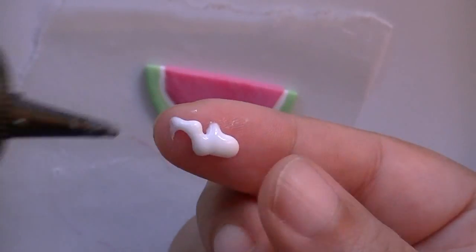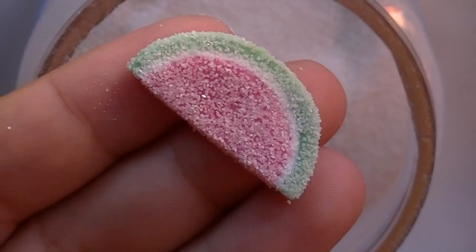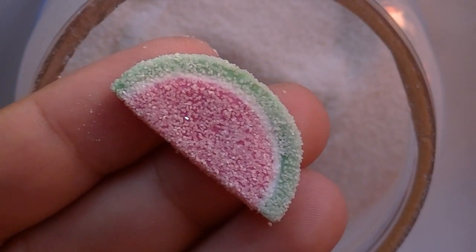Put some translucent liquid Sculpey in your fingers and then dip it in the sand. Here it is. Now make as many different color variations as you'd like.